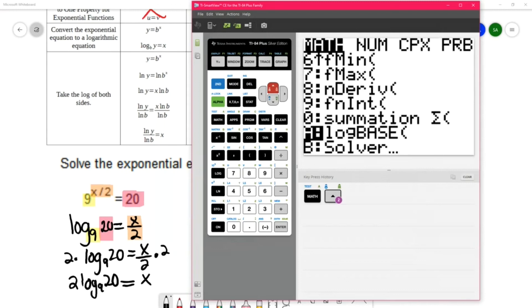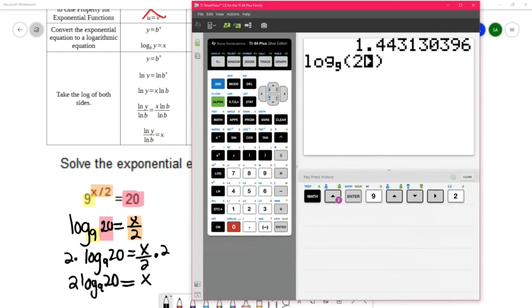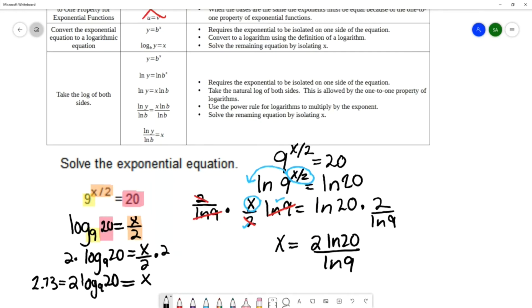And I want to do log base 9 of 20. Log base 9 of 20, and I really should have multiplied by 2 first but I can multiply by 2 right now. And that's approximately, let's say 2.73 if we round to the hundredths place.